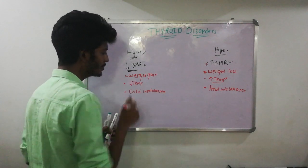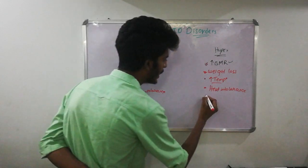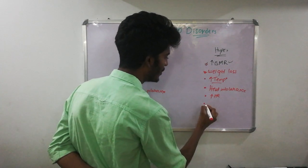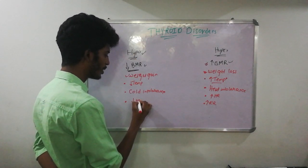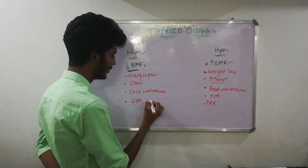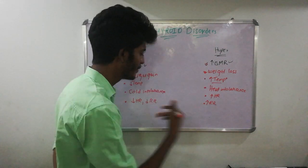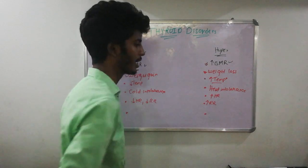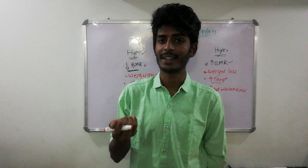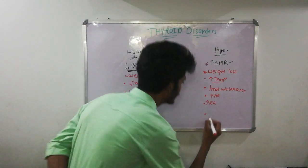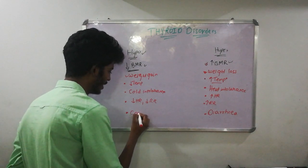Regarding cardiac rate, heart rate is elevated in hyperthyroidism, as is the respiratory rate. In hypothyroidism, heart rate is decreased — leading to bradycardia — and respiratory rate is also decreased. For the gastrointestinal tract, more metabolism means elevated intestinal motility, which leads to diarrhea in hyperthyroidism. In hypothyroidism, the opposite occurs, and the patient ends up constipated.